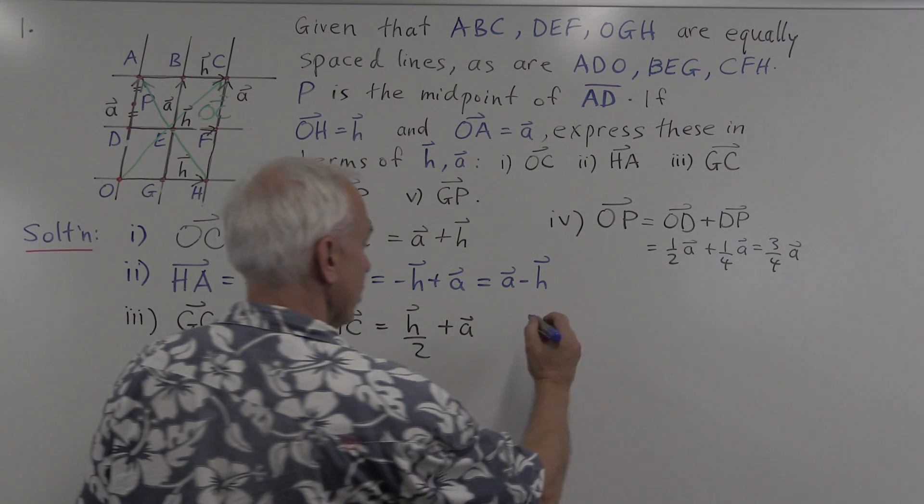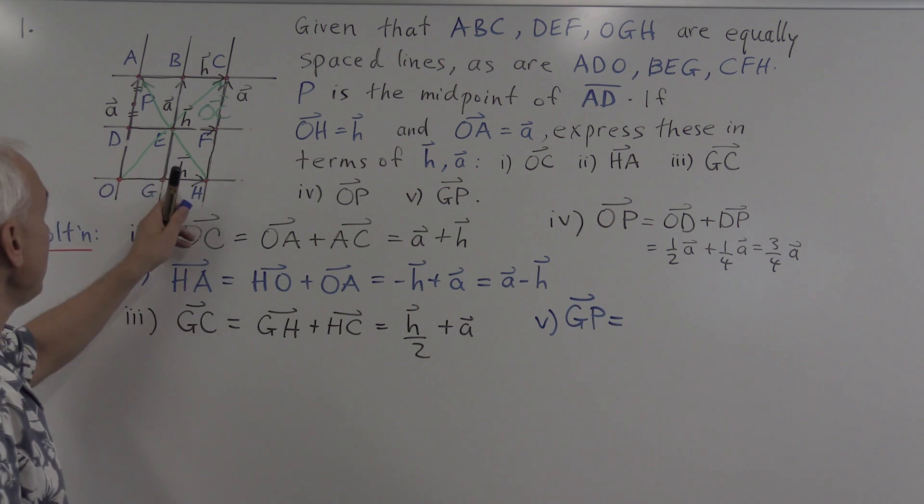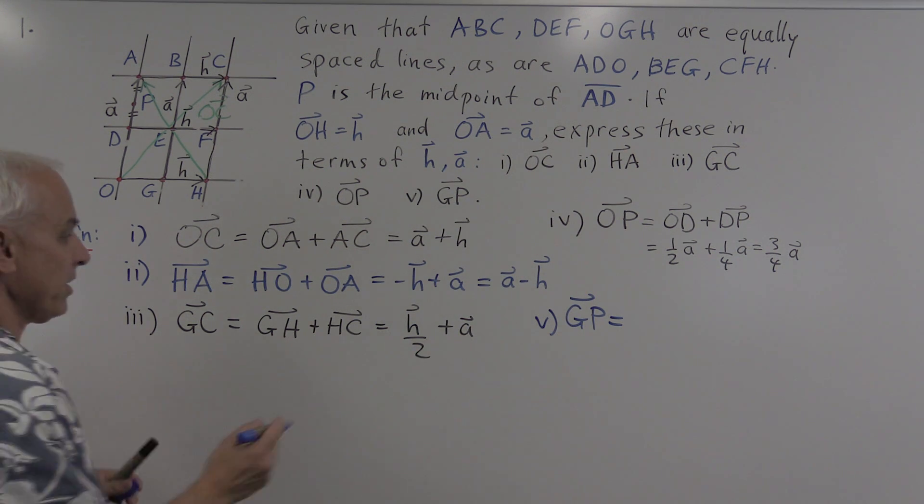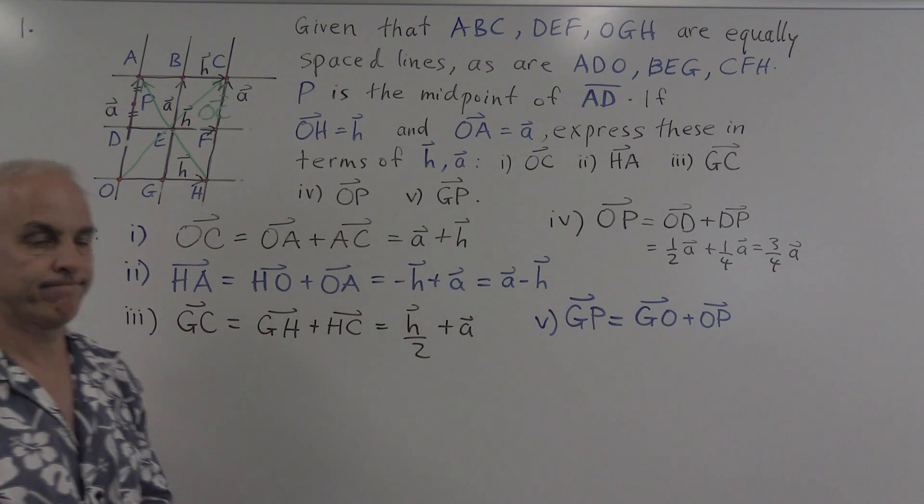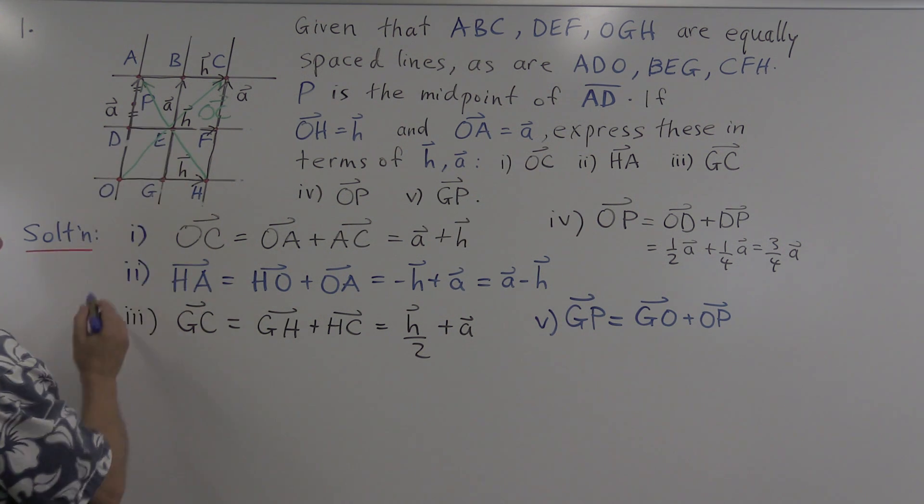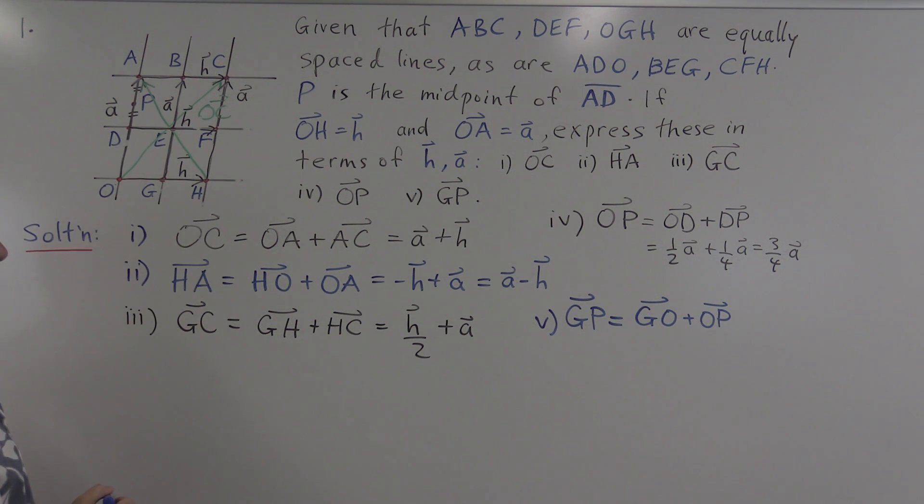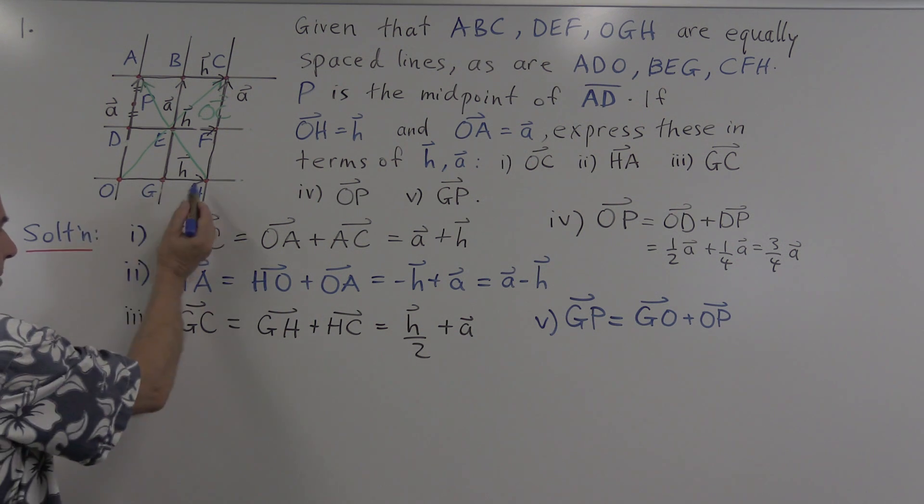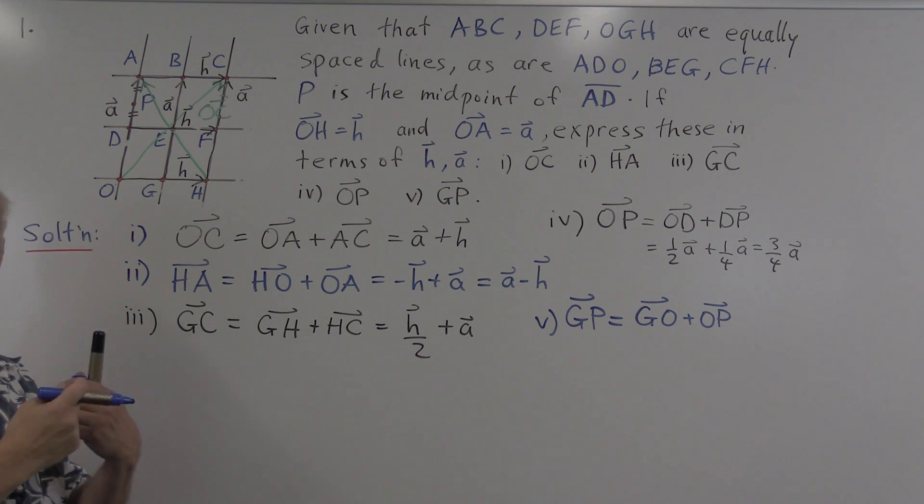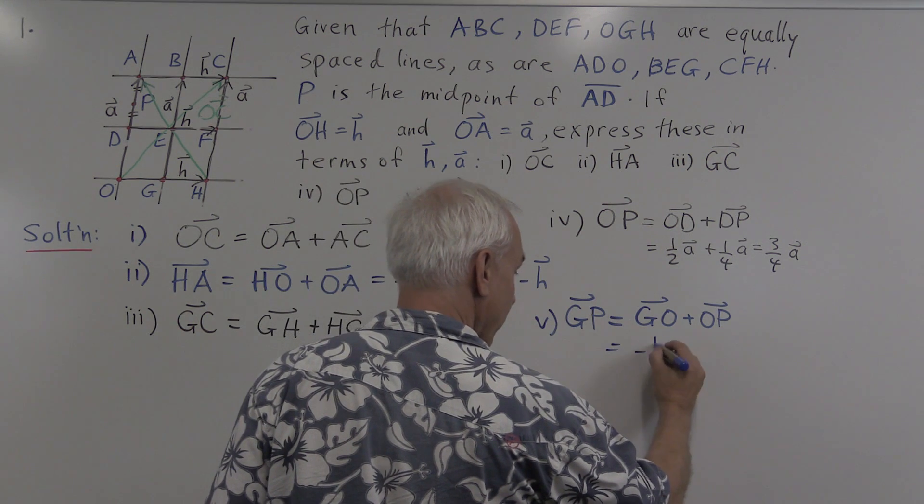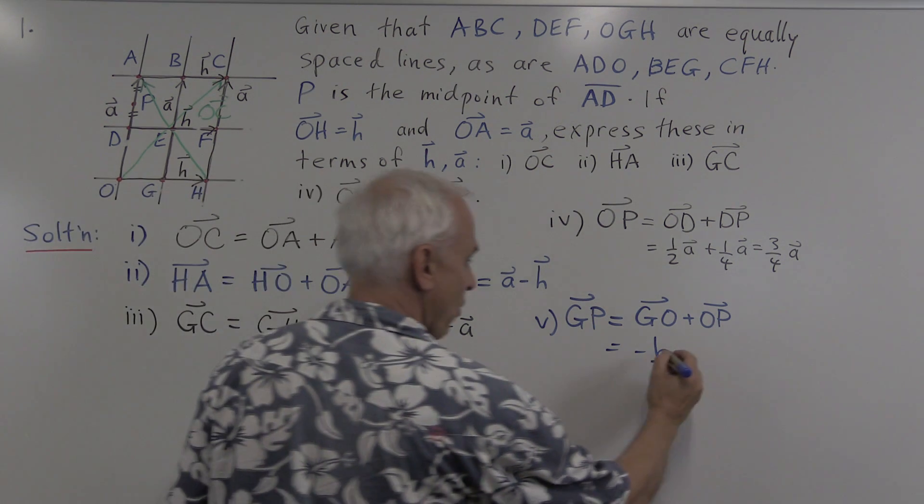And finally, GP, the vector from G to P. We can think about that as being the sum of GO with OP. To go from G to P, we can get there by first going in this direction and then going in this direction. Now GO is the same as HG. That's in the direction of h, but half the size and in the opposite direction. So that's minus h over two. And OP, we've just established that that's three-quarters of a.